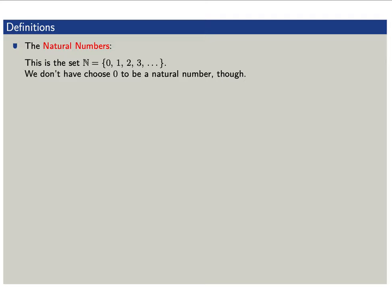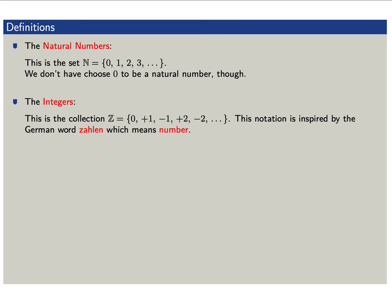Recall that the natural numbers is the set of whole numbers, consisting of 0, 1, 2, 3, and so forth. Some books define natural numbers to be just the positive integers. The integers consist of the positive and negative whole numbers: 0, plus or minus 1, plus or minus 2, and so forth. We typically use the notation Z to denote the integers, inspired by the German word 'zahlen,' which means 'number.'